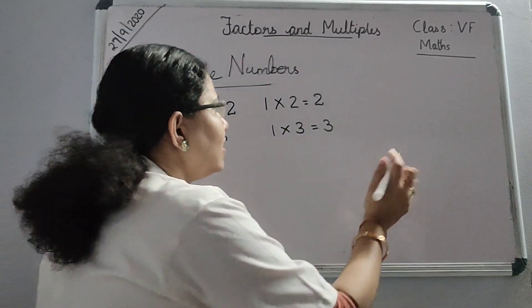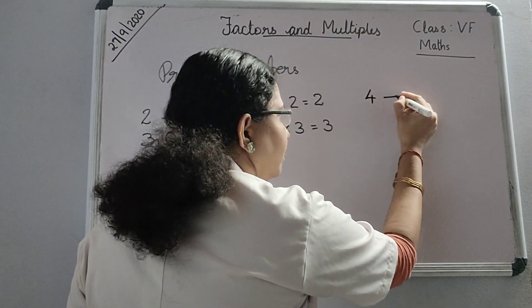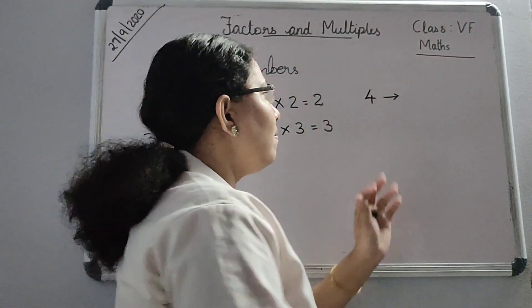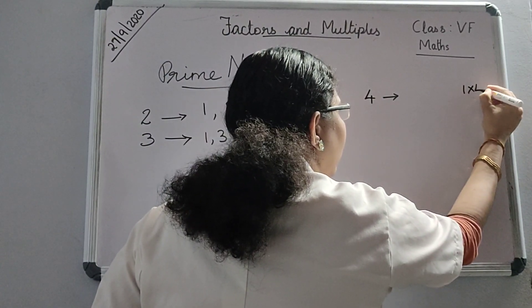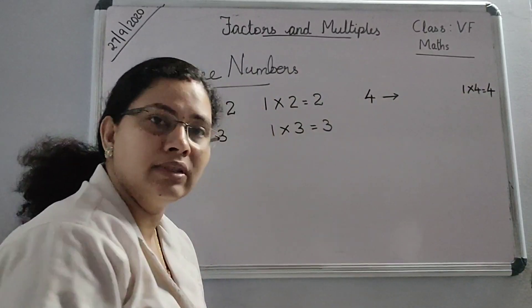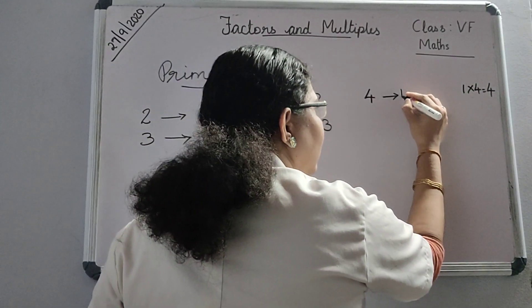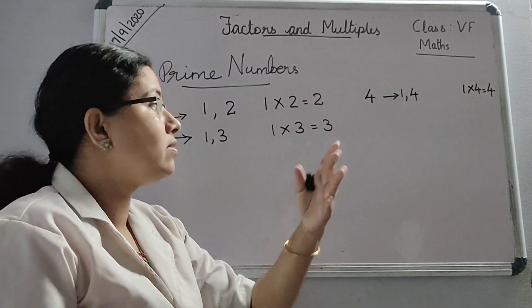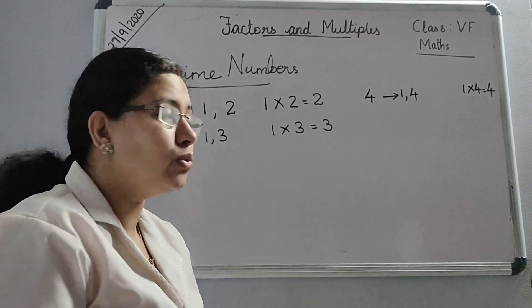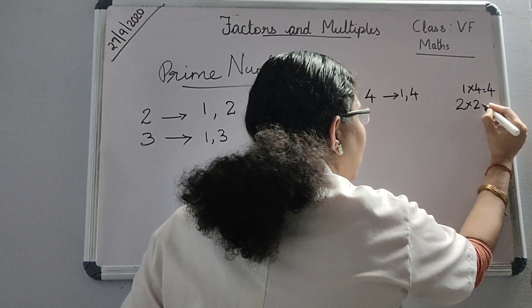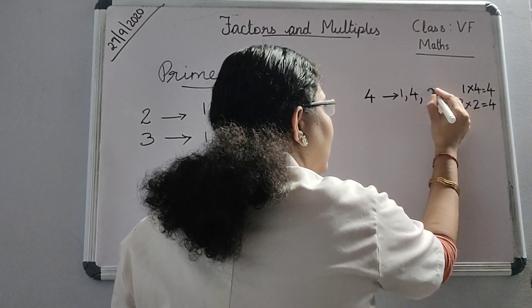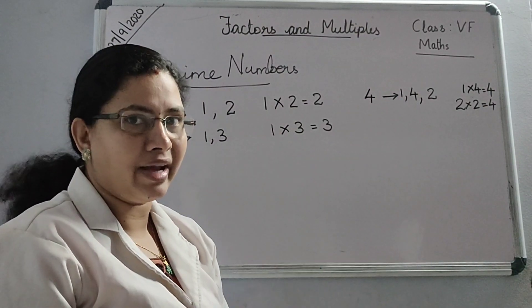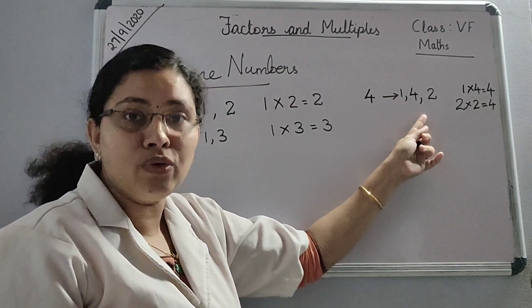But when I take another number — 4. When I multiply 1 with 4, I will be getting 4. So 1 and 4 are the factors of 4. Any other factor? Yes — 4 is a multiple of 2, so when 2 is multiplied with 2, you will be getting 4. So there is another factor: 2. How many factors are there for 4? 3 factors: 1, 2, and 4.